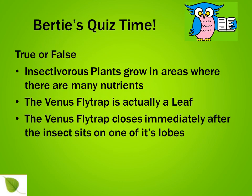Quiz time! Answer whether the following statements are true or false. Insectivorous plants grow in areas where there are many nutrients. The Venus flytrap is actually a leaf. The Venus flytrap closes immediately after the insect sits on one of its lobes.